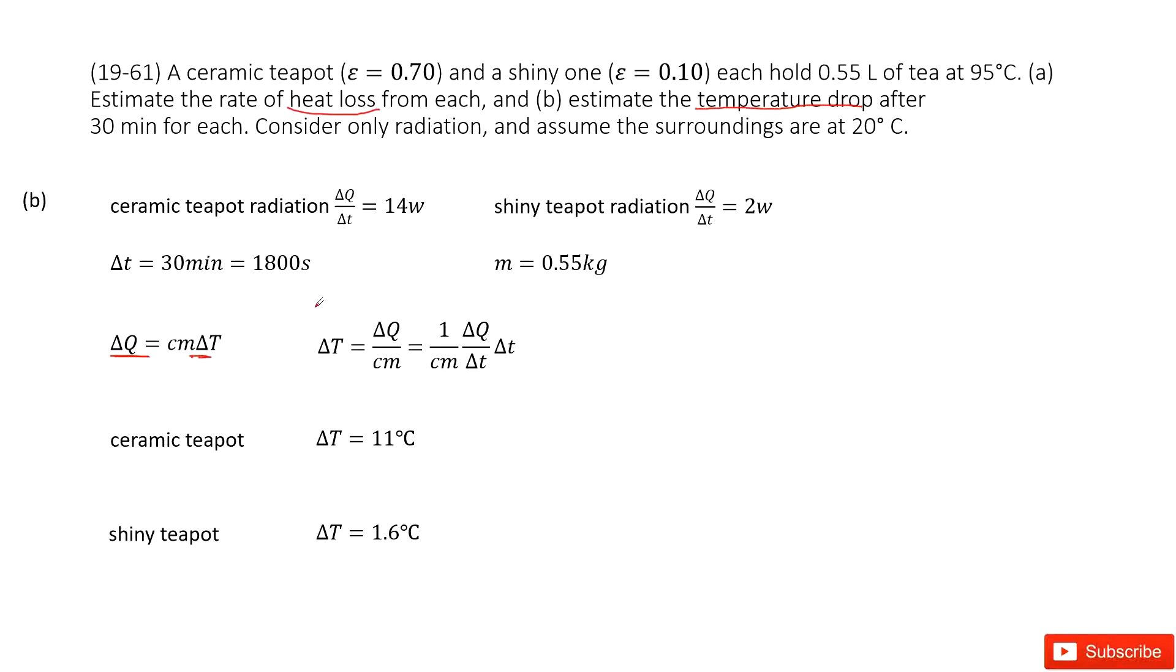We need temperature change, so ΔT = ΔQ/(cm). We don't know ΔQ, but we know the rate. We use a trick: divide by Δt and multiply by Δt. So ΔT equals ΔQ/Δt times Δt over cm. ΔQ/Δt is the rate we just calculated.